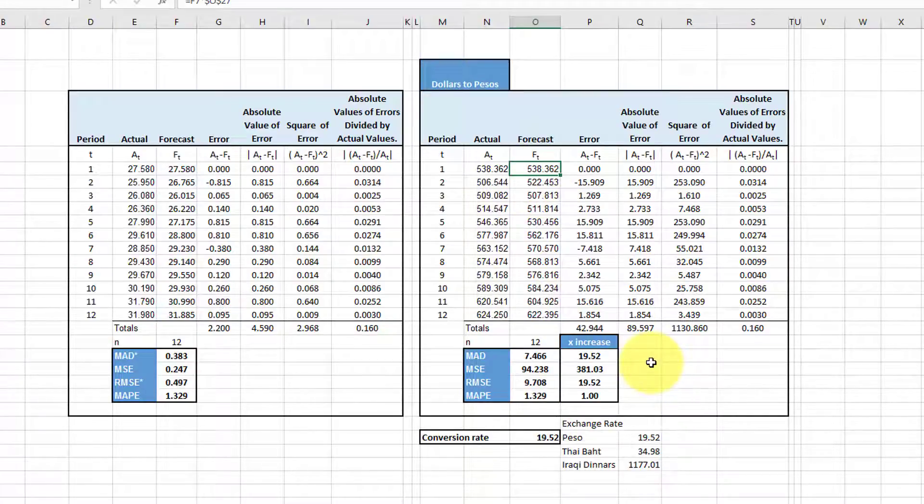But look what happened to our error metrics. The MAD and the MSE and the RMSE increased 19.52 times, which is logical since that was the conversion rate. But the MSE, the mean squared error since it's dealing with squares, jumped to 381.03 times as large as the original.